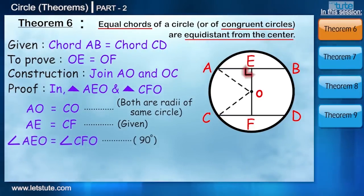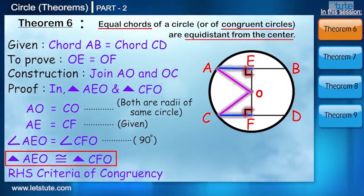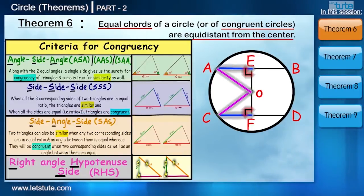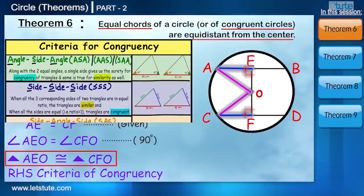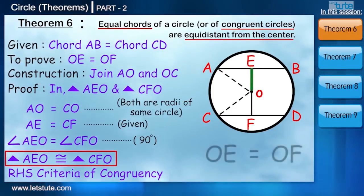Angle AEO is equal to angle CFO because both are 90 degrees. So from this we can say that both the triangles are now congruent by RHS criteria of congruency. So from this we can say that OE is equal to OF.